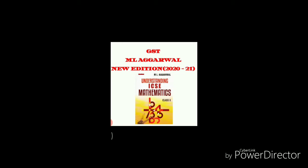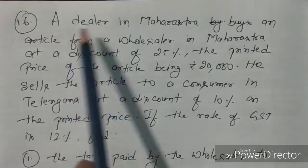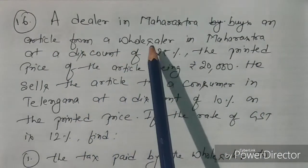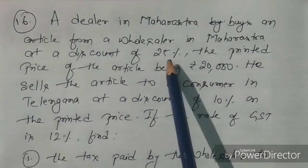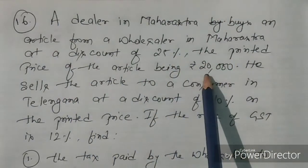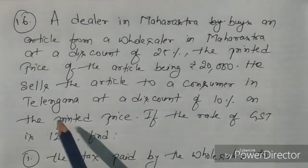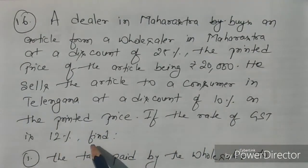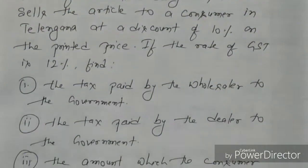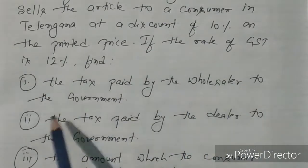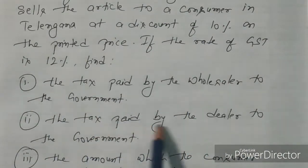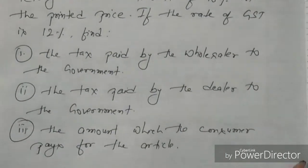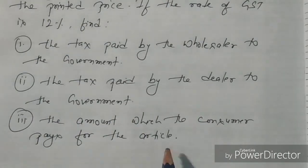Hello students, welcome again to my channel Educational Success. My name is Bhaskar. Today we're going to solve the next question of the chapter GST — question number 16. A dealer in Maharashtra buys an article from a wholesaler in Maharashtra at a discount of 25%, the printed price of the article being 20,000. He sells the article to a consumer in Telangana at a discount of 10% on the printed price. If the rate of GST is 12%, find: the tax paid by the wholesaler to the government, the tax paid by the dealer to the government, and the amount which the consumer pays for the article.